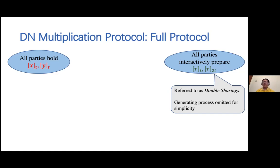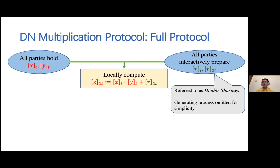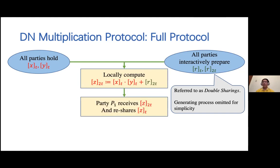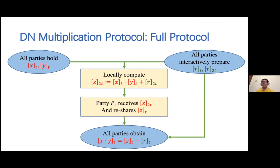Finally, to obtain a sharing of the correct value, all parties need to subtract the degree-T sharing of R from the sharing distributed by P1. This completes the description of the DN multiplication protocol.